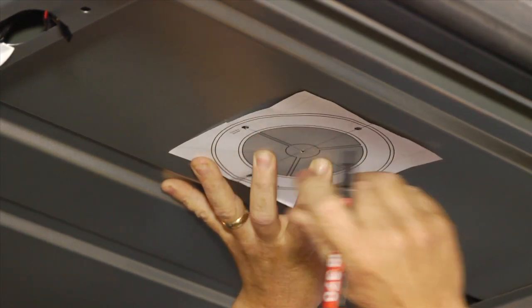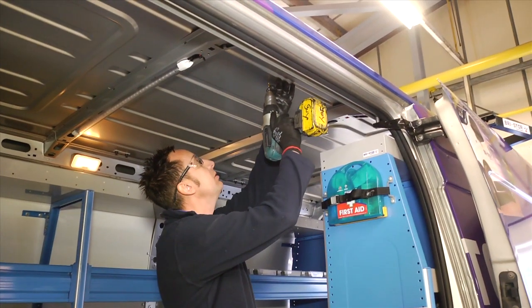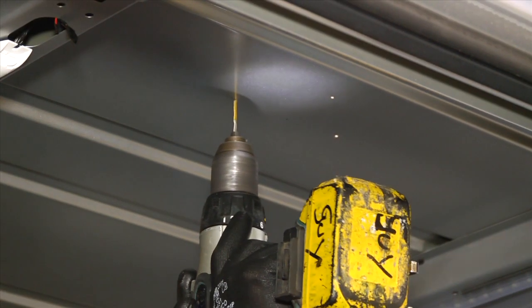Note, we suggest you fit your Flettner close to a roof strut or support. Do not fit it to a large unsupported section of the roof. For best results, we recommend the addition of a passive inlet air grill set low down inside the vehicle. Don't forget to wear safety glasses for this next stage.